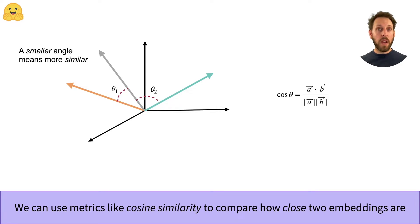In this example, our embedding vectors live in 3D, and we can see that the orange and grey vectors are close to each other and have a smaller angle.